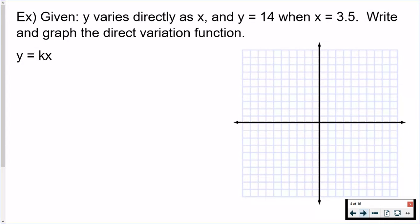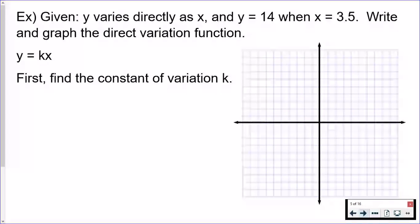We're also told that y equals 14 when x equals 3.5. You will always be given enough information here to find k because that's something that you will not be told. So the first thing we're going to do is find our constant of variation. And with that, we're going to write and then graph the direct variation function. Like I said, the first thing we're going to do is find the constant. That should be your first step in these problems.